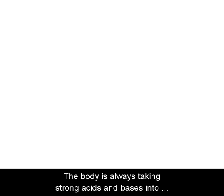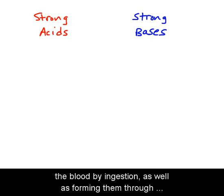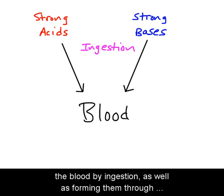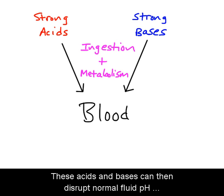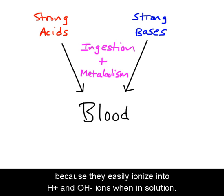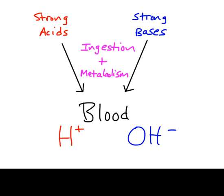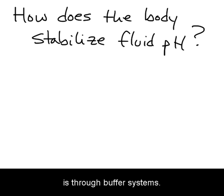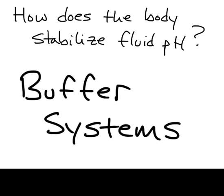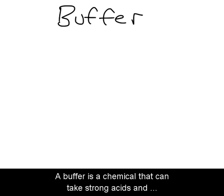The body is always taking strong acids and bases into the blood by ingestion as well as forming them through normal metabolism. These acids and bases can disrupt normal fluid pH because they easily ionize into hydrogen and hydroxide ions when in solution.